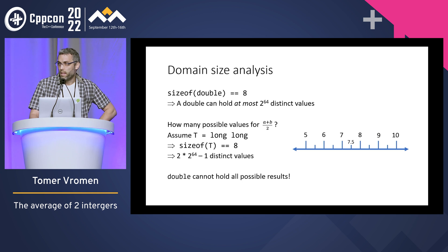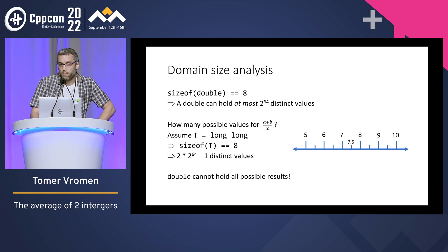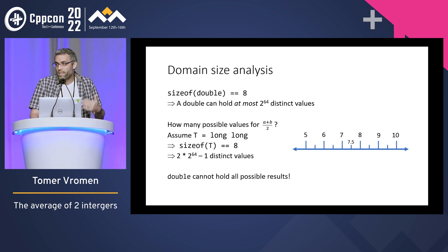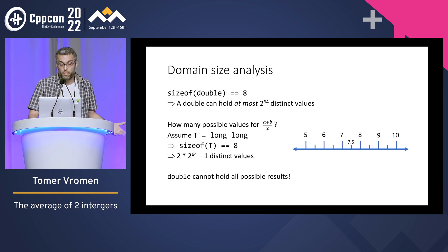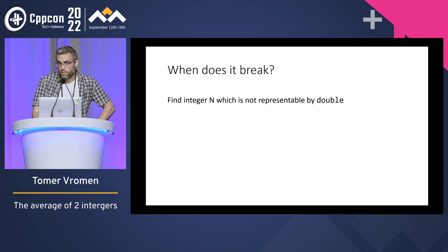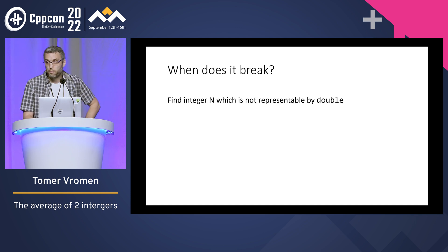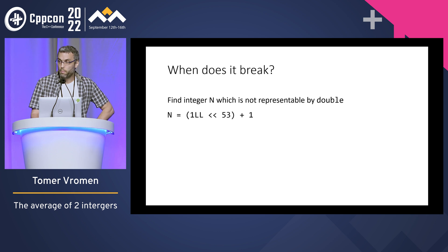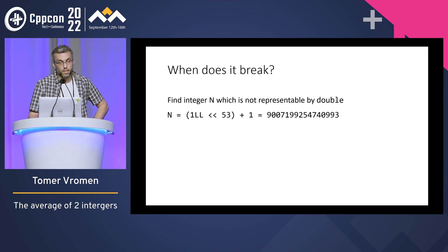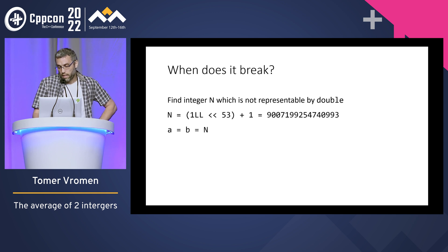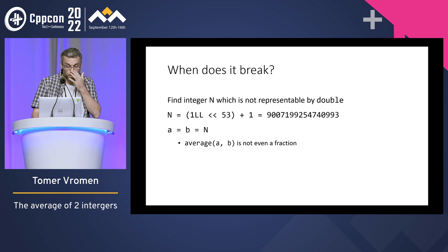So that's bigger than the number of values a double can hold. Double simply cannot hold all the values we need. That means no matter how clever I am, I cannot write a function with that signature that will always return the correct result. Let's see when it breaks. We'll take some integer N which is not representable by a double — for example, this nice number. You can even Google the literal and find more information. We'll set A and B equal to N, and notice that the average of A and B is not even a fraction — it's just a whole number.